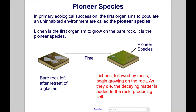In primary ecological succession, the first organisms to populate an uninhabited environment are called the Pioneer Species. Lichen is the first organism to grow on the bare rock — it is the Pioneer Species. Over time, lichens followed by moss begin growing on the rock. As they die, the decaying matter is added to the rock, producing soil.